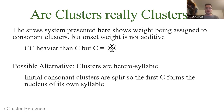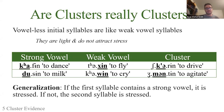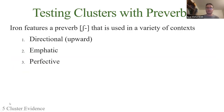A possible counter-analysis is that these initial consonant clusters are heterosyllabic — the first C forms the nucleus of its own syllable. Under this view, what looks like first-syllable stress on a weak vowel could actually be second-syllable stress, because the initial consonant heads its own syllable with no vowel. This would preserve the original nucleus-quality generalization from the previous literature.